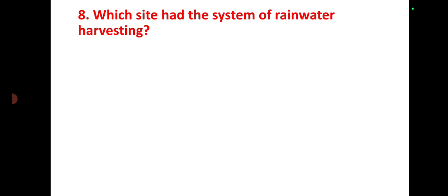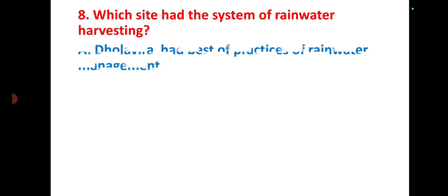Question number eight: which site had the system of rainwater harvesting? Dholavira had the best practices of rainwater management. Dholavira is noted for its sophisticated rainwater harvesting and storage systems.